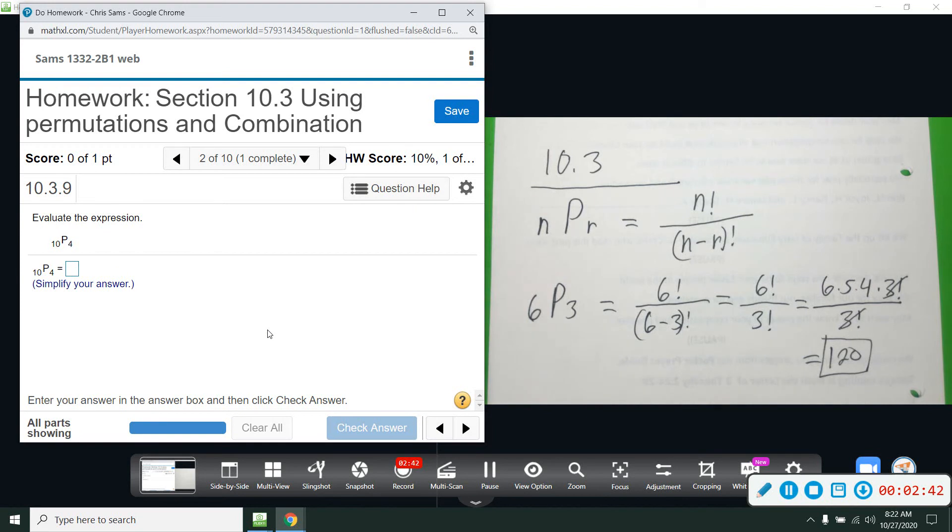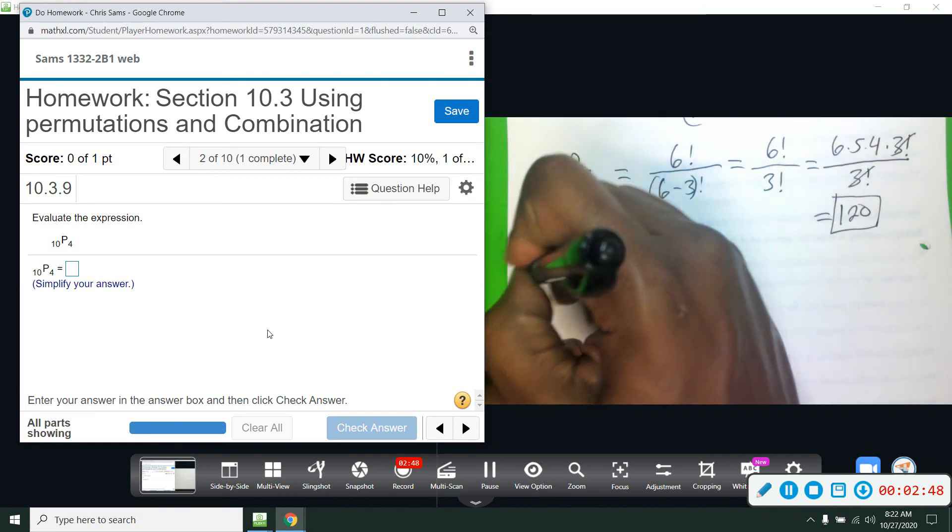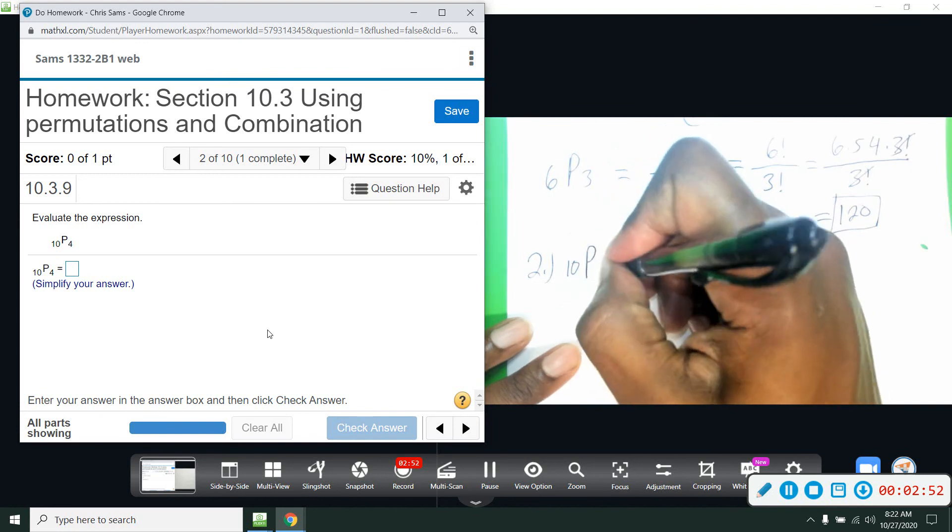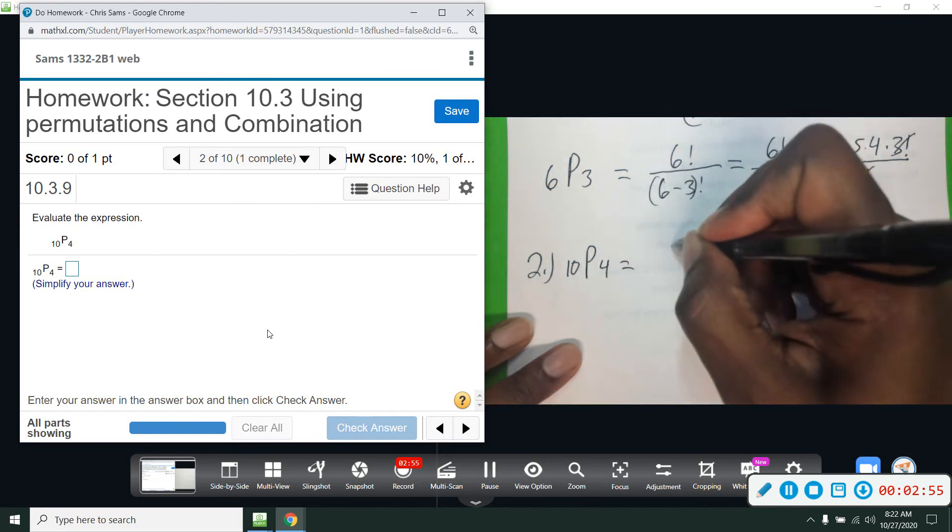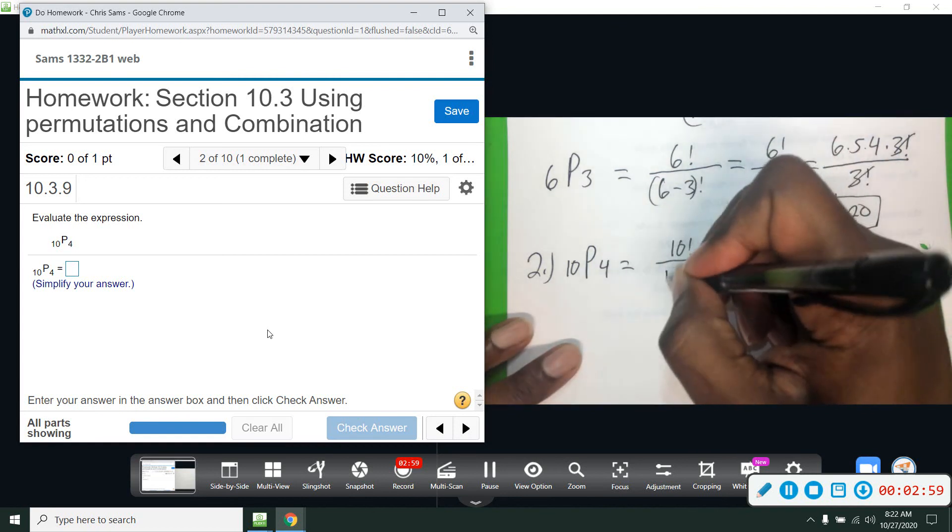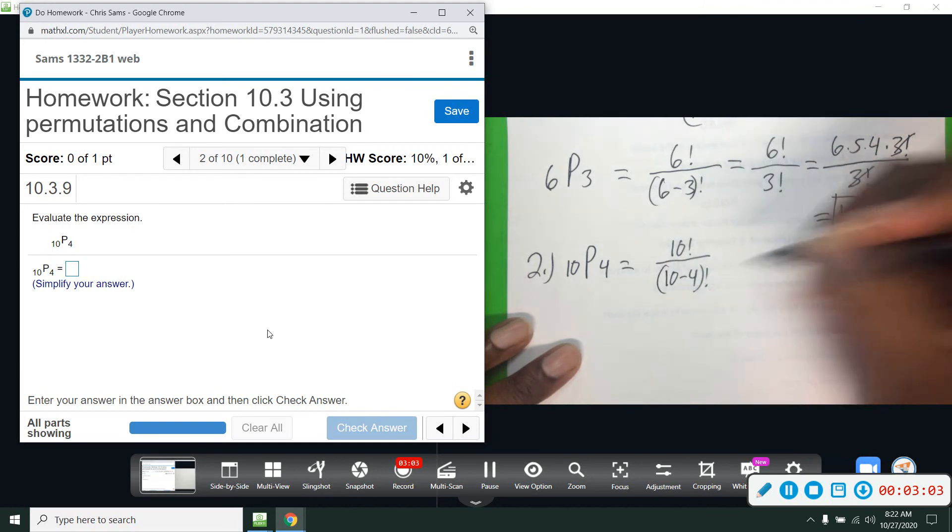All right, and then 10P4 - we're going to do that for number 2. We have 10P4, so following that formula: 10 factorial on the top and then (10 minus 4) factorial on the bottom.